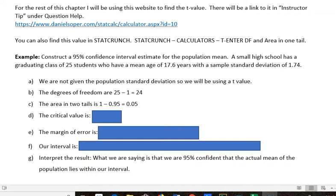For the example, construct a 95% confidence interval estimate for the population mean. A small high school has a graduating class of 25 students who have a mean age of 17.6 years with a sample standard deviation of 1.74.